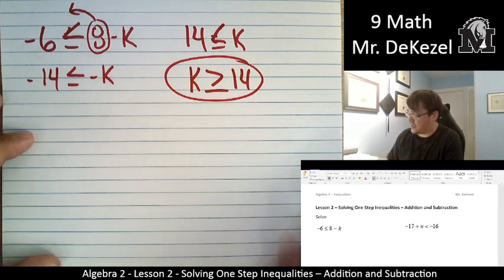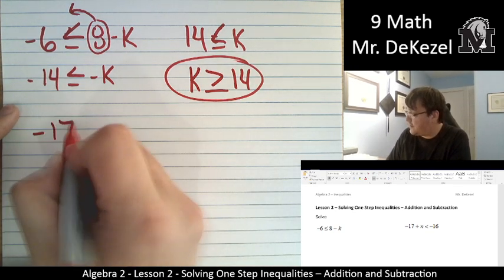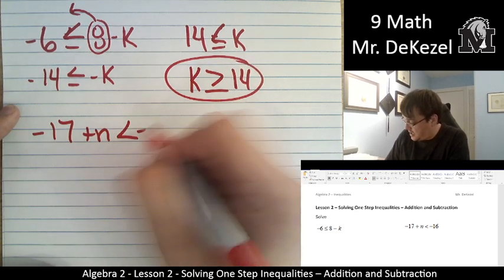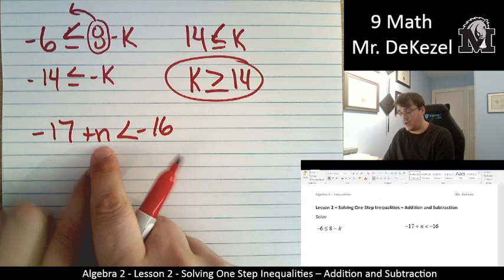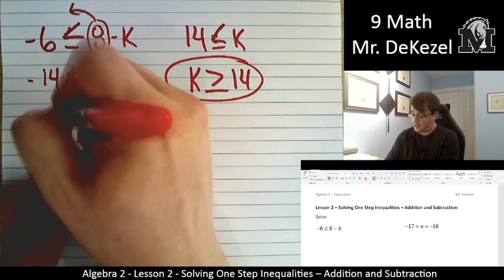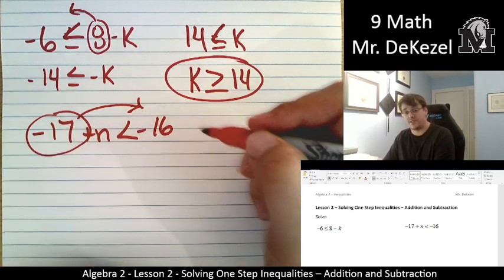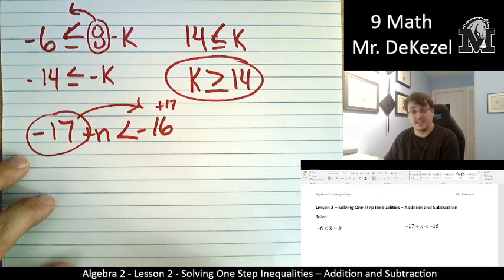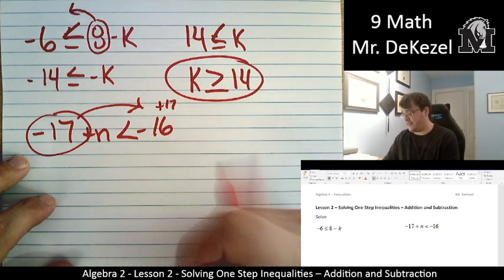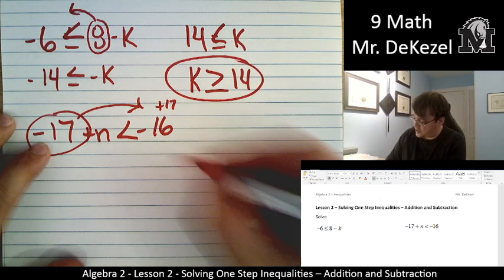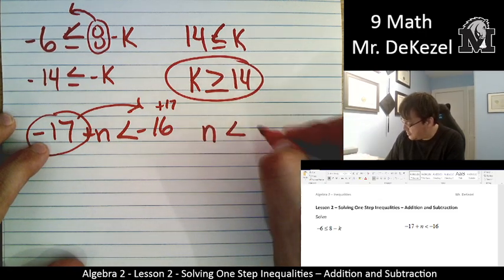Let's go ahead and go to the next one. -17 + n < -16. We're going to be solving for n. We want to get n all by itself. So we just have to take this -17 and go to the other side with it and add it to the other side. -16 + 17, that's 1. So we're just left with n < 1.